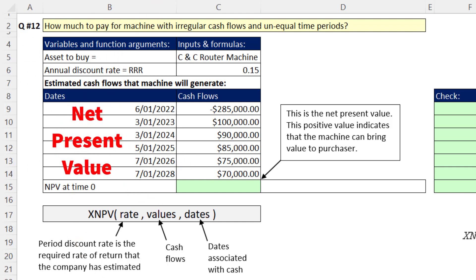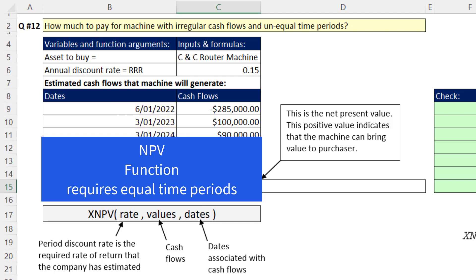When performing net present value calculation to value an investment based on cash flows, the XNPV function allows you to put in the required rate of return for the period, the cash flow values, and the dates associated with those cash flow values. That's different than the NPV function, which requires the cash to come at the end of equal time periods.